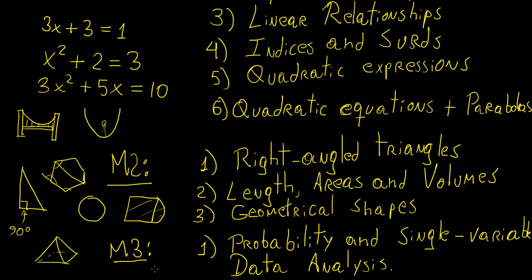The final module is module 3, and this one only has one topic: probability and data analysis on a single variable. Probability tells you how to calculate the chance of something happening — for example, if you throw a die, what are the chances of getting a six, or if you're buying a lottery ticket, what is the probability that you might actually win. We'll use these concepts to calculate that and decide whether it's a good investment. Single variable data analysis means we'll analyze one variable in relation to other things, applying knowledge from linear relationships and other topics in numbers and algebra.